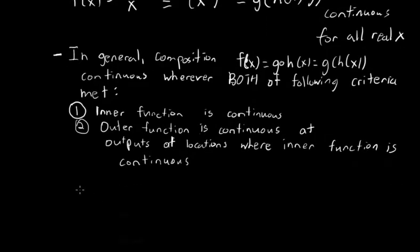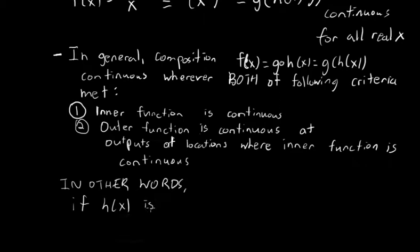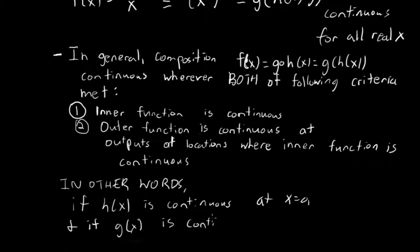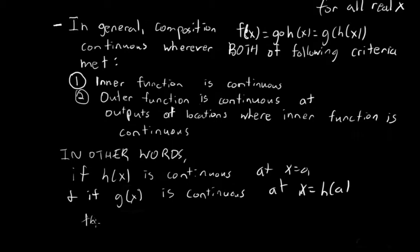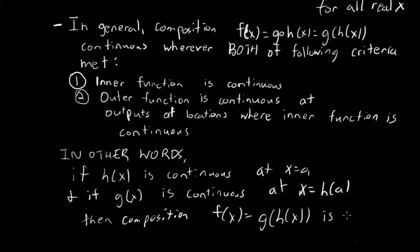To put it more mathematically: if h of x is continuous at x equals a, and if g of x is continuous at x equals h of a — so g of x has to be continuous at h applied to those points a —